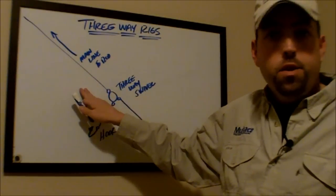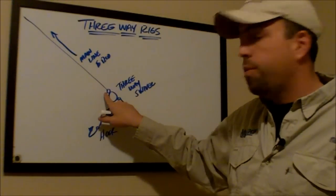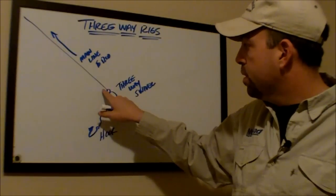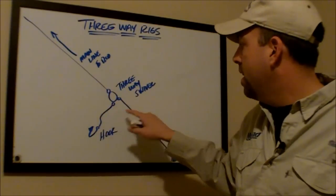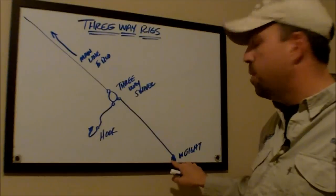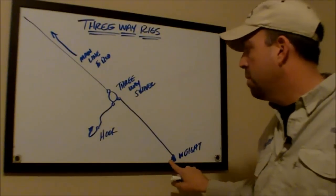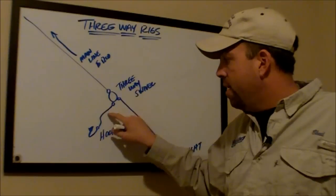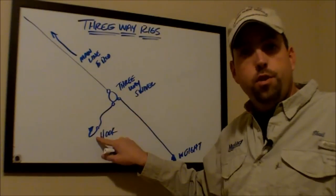Basically, you have your main line running to your fishing rod with a three-way swivel, and to the top of this three-way swivel you have your main line tied, and then the bottom of the three-way swivel, you have a piece of line that runs to the weight at the bottom of the rig. Then off that line, you have a leader that runs to your hook.